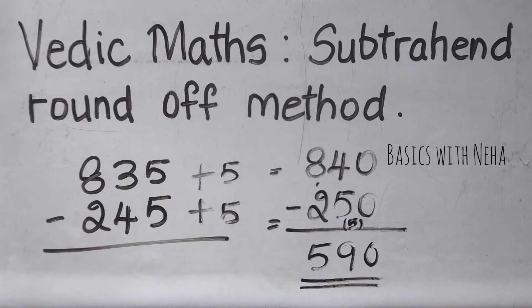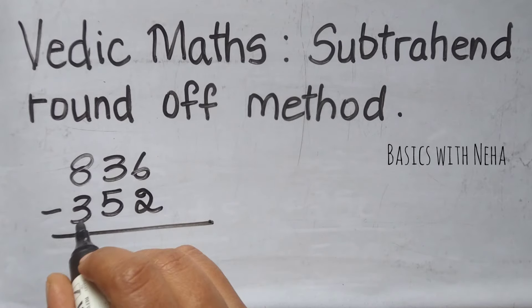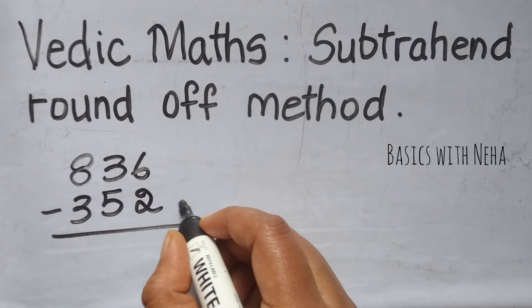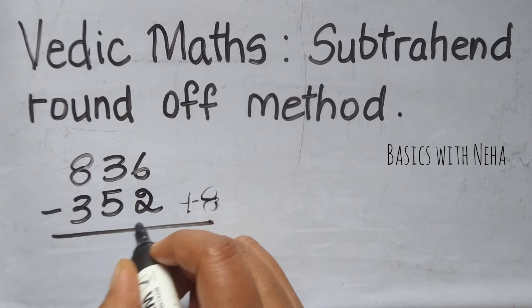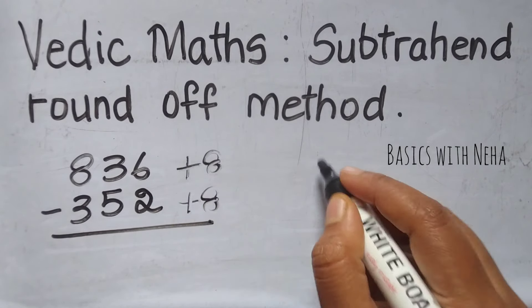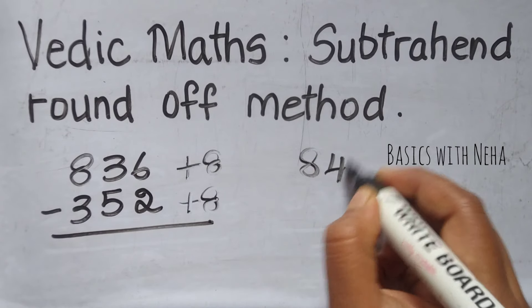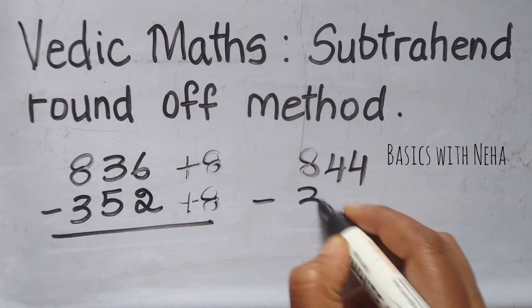Let's try the next sum. 836 minus 352. So now I'll have to first round this subtrahend. So if I add 8 here, it will be 360. So when I add 8 to the subtrahend, I have to add the same number to the minuend as well. So the new question that is going to be formed will be 844 minus 360.